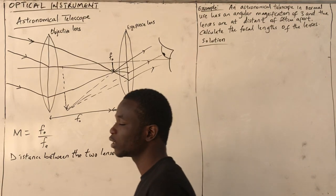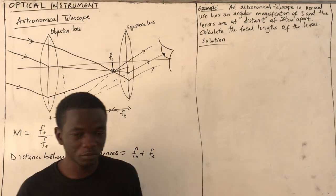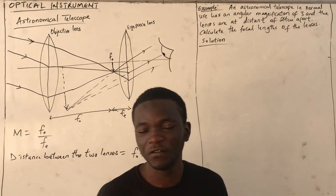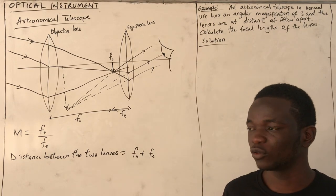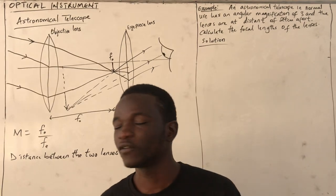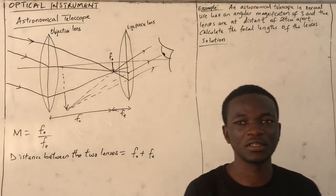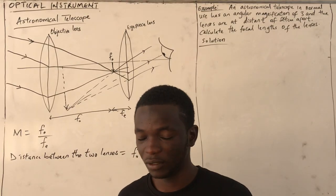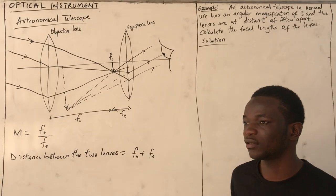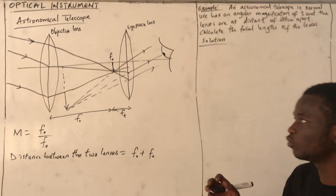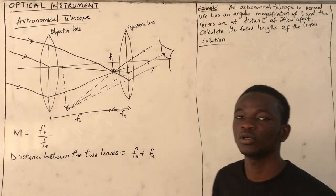In the previous video, we looked at instruments used to view objects that are too small to be seen by the eye. What if you want to view objects that are too far to be seen by the eye? For example, distant stars. For this, we use what we call the astronomical telescope.